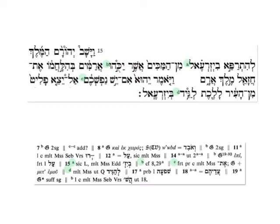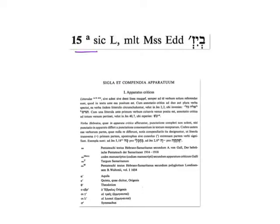Our focus in this case is going to be on the first of these notes, that is, letter A, and that note for verse 15. We can see that each of the different notes are divided from each other by a series of vertical lines, and each is marked with the letters of the alphabet. Upon examination of the note, we find that it's actually abbreviations that are in Latin, so it's going to take a little bit of work. The letter itself stands for the word that's in the text, and then this note is in relation to it.